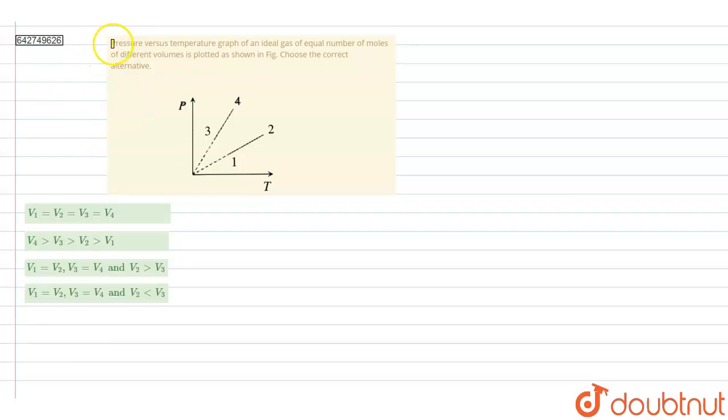Hello everyone, in this question, pressure versus time graph of an ideal gas of equal number of moles of different volumes is plotted as shown in figure. Choose the correct alternative.